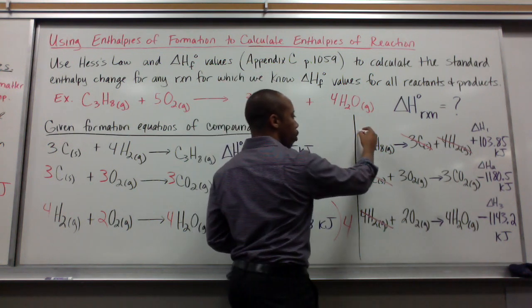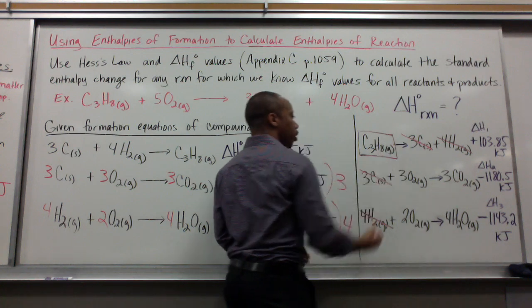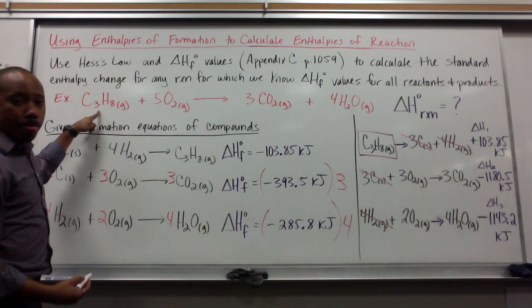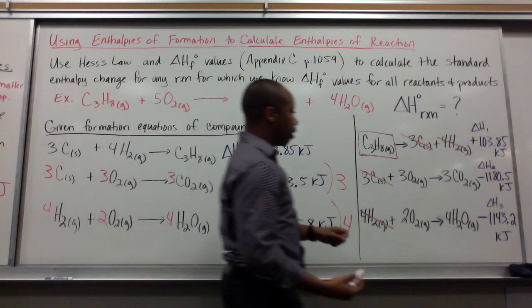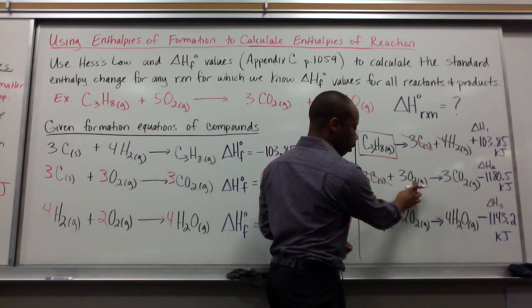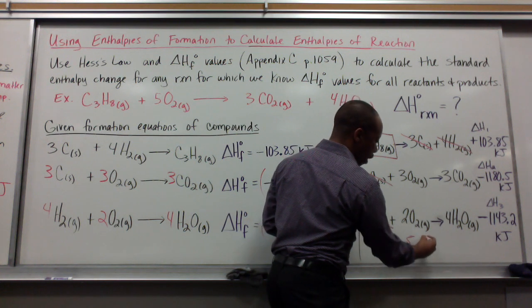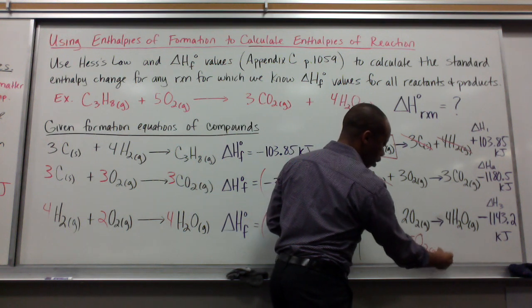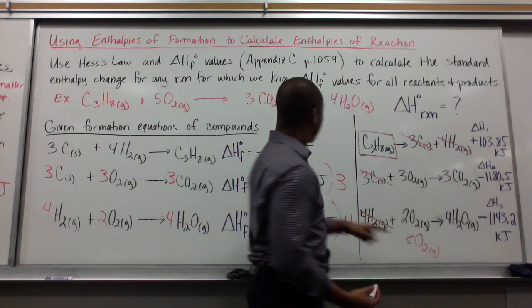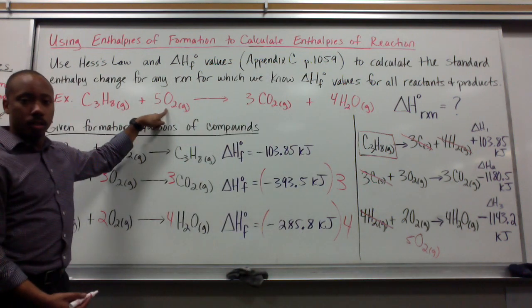Leaving us with only one mole of C₃H₈. Which is what we want. And three moles of O₂ plus two moles of O₂ give me five moles of O₂. Which is what we want. So we're on the right track.